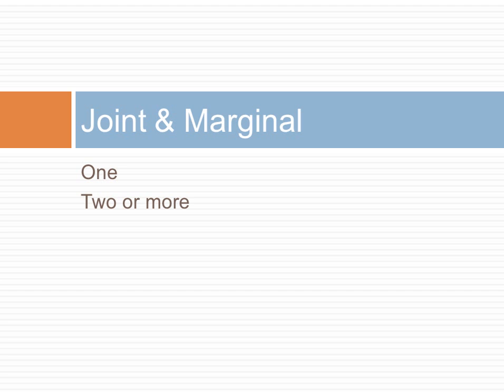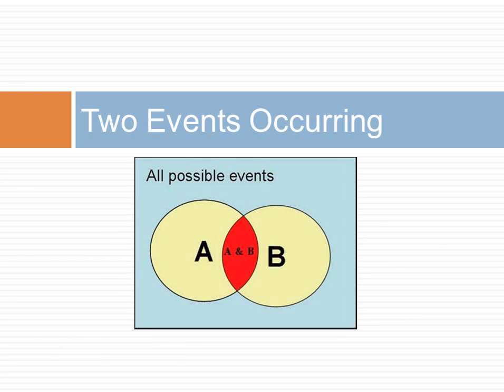The probability of two or more events is referred to as a joint probability. This Venn diagram shows the probability of two events occurring. The red area shows the situation where both events co-occur. The yellow area marked with letter A shows the frequency of event A occurring without event B. Similarly, the yellow area with letter B shows the event in which only event B occurs.